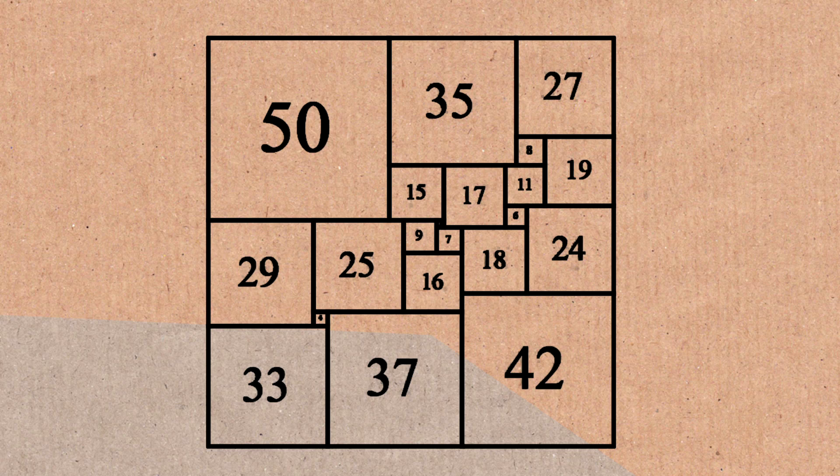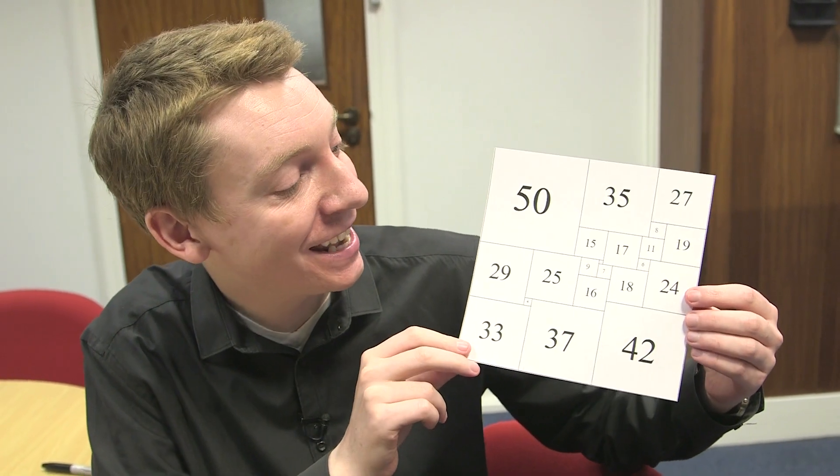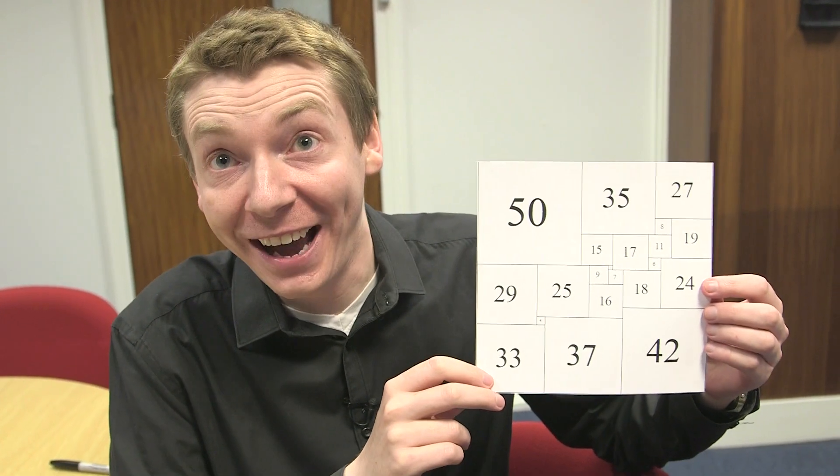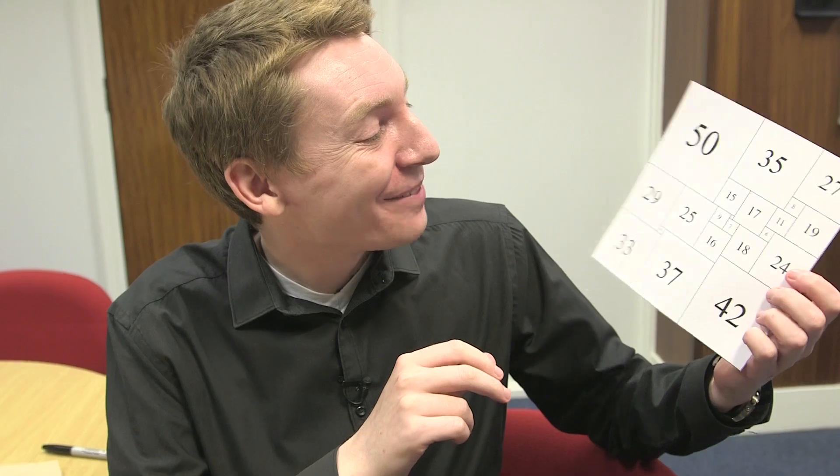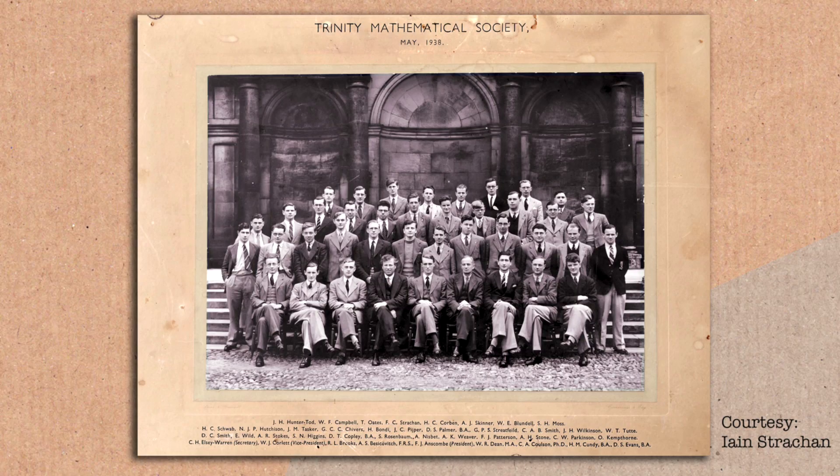So it's called a squared square. Why have they picked this as their logo for their society? Because they're nerds. Well yeah, and that. And because it was Trinity Math Students that solved this.